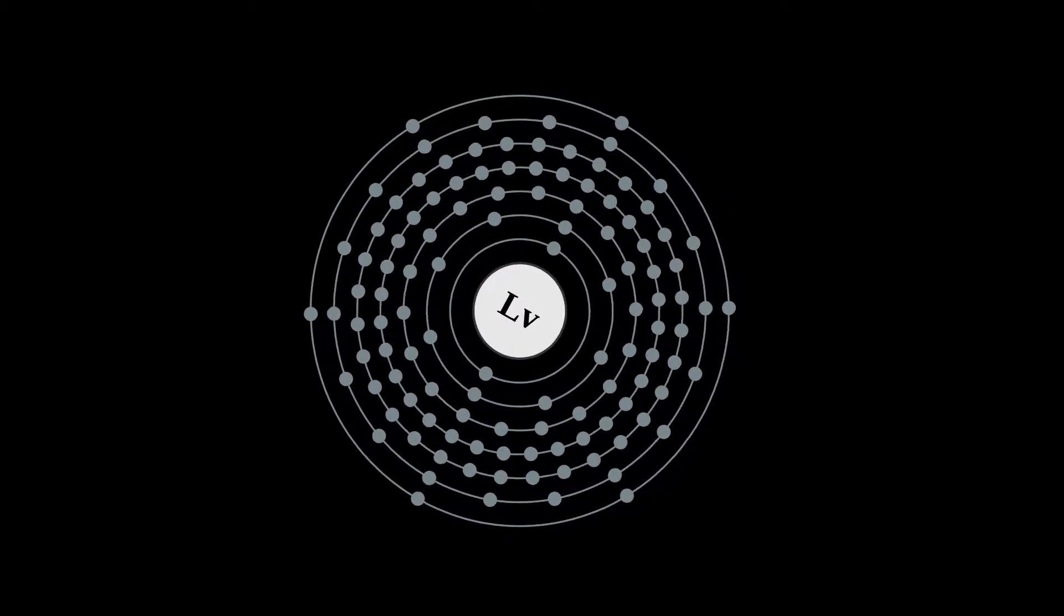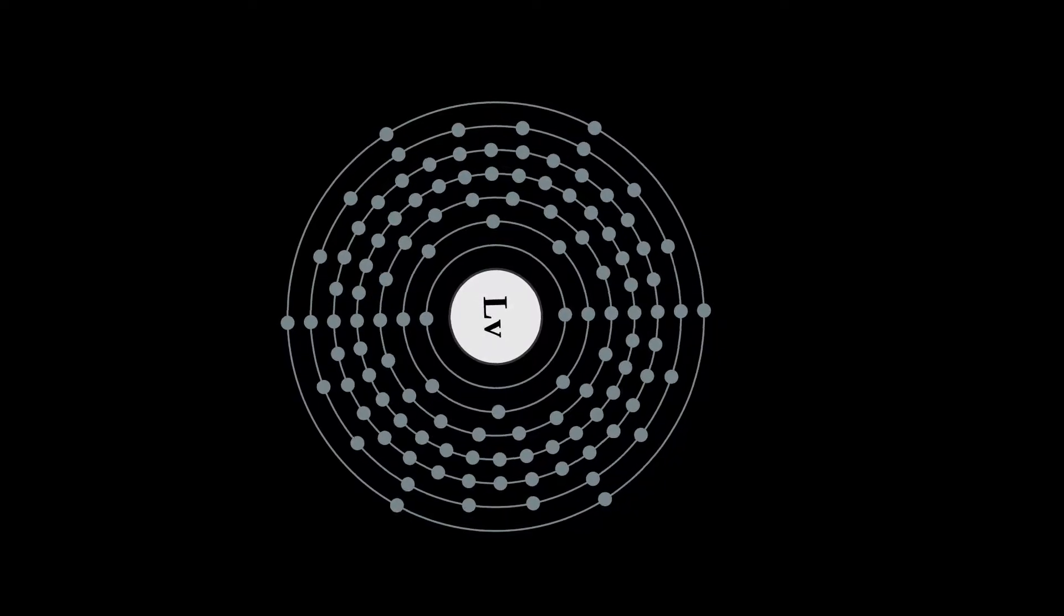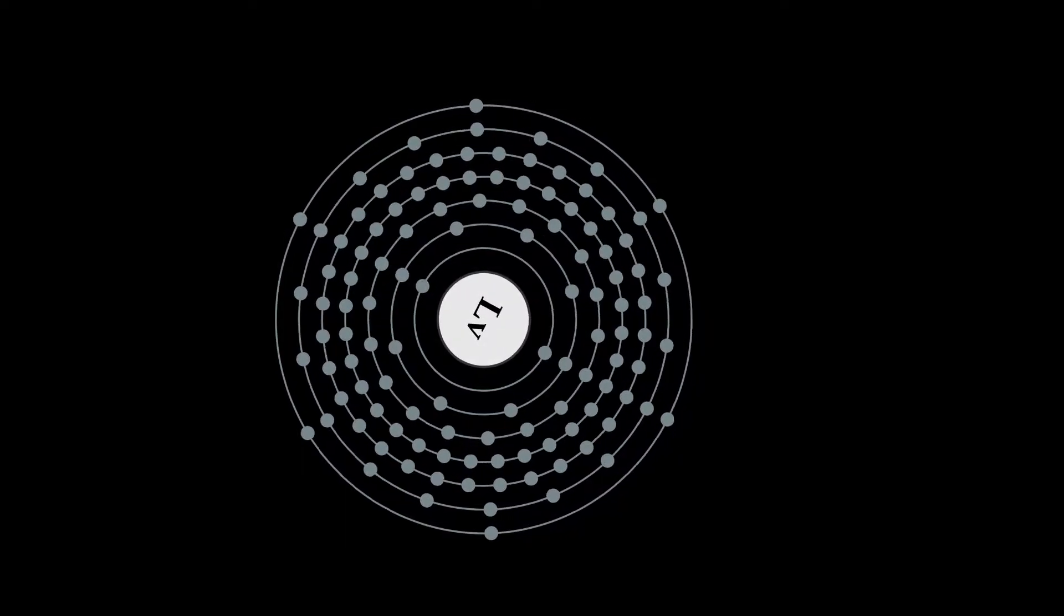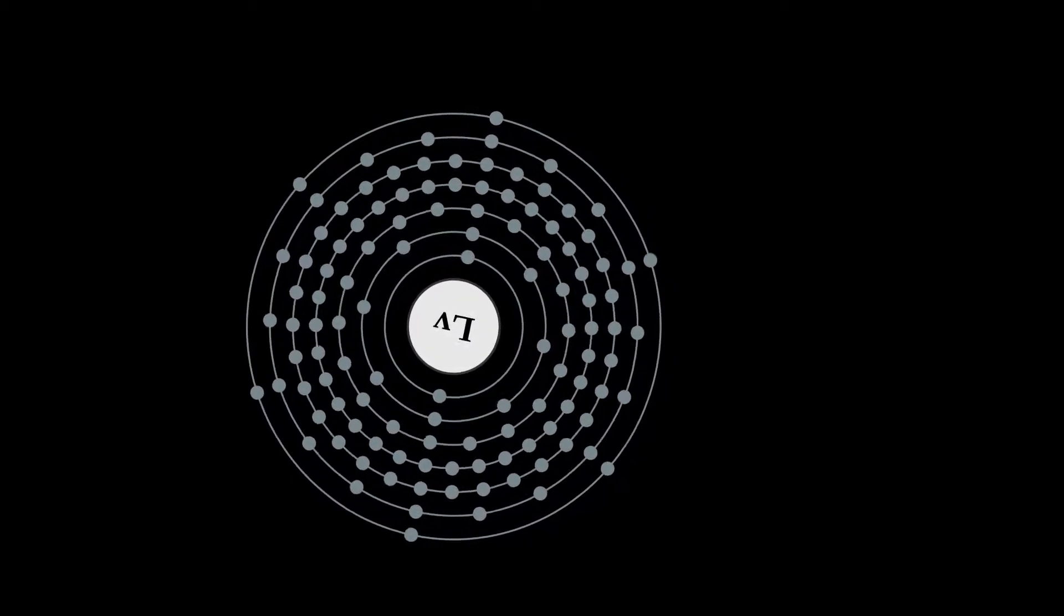Livermorium is a synthetic super-heavy element with symbol LV and atomic number 116. It is an extremely radioactive element that has only been created in the laboratory and has not been observed in nature.